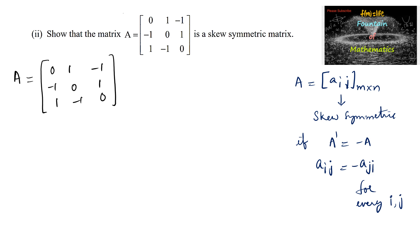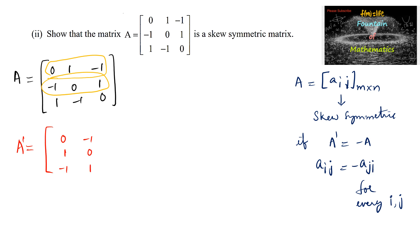So A transpose of the matrix is computed by making each row into a column. The first row gives the first column: 0, 1, and negative 1. The second row gives the second column: minus 1, 0, and 1. The third row gives the third column: 1, negative 1, and 0.